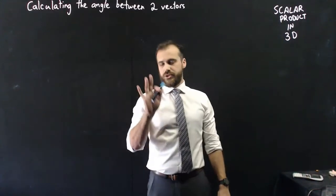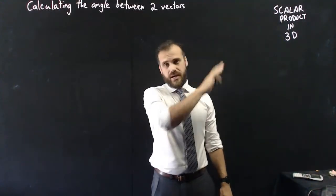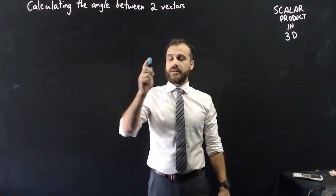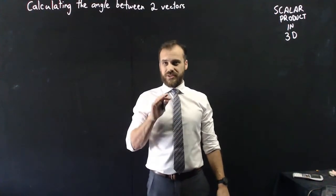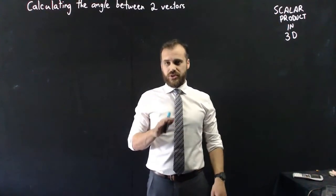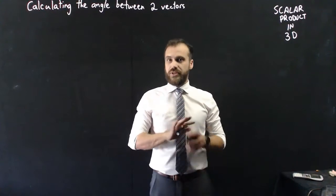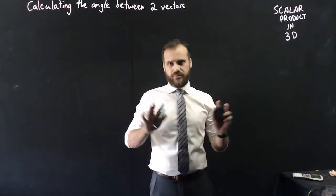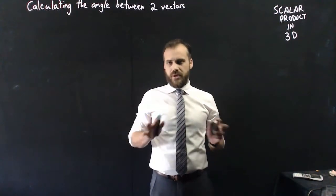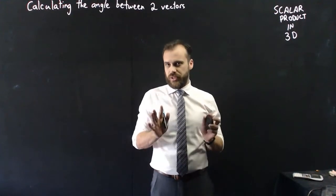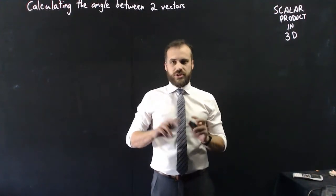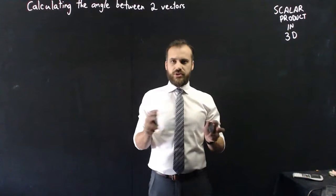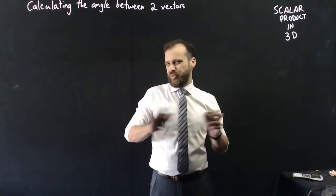Probably the most useful thing with the scalar product is calculating the angle between two vectors, which is really hard to do when vectors are in three dimensions if you didn't know the dot product. But with the dot product it's really, really simple — you just take the two formulas, do some calculations, and put them together.